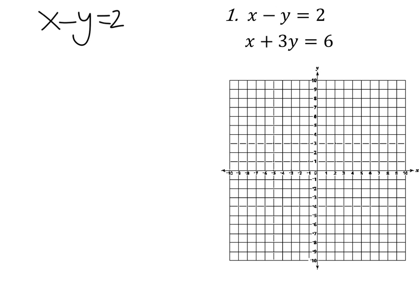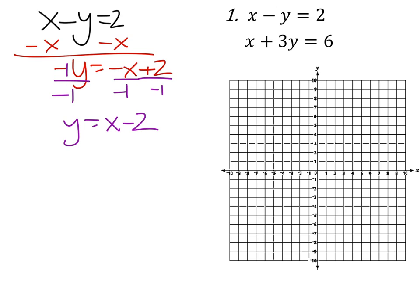So if we want to change this first equation, we would subtract x from both sides. That would give us negative y equals negative x plus 2. Finally, we would divide everywhere by that negative 1, and we'd get y equals x minus 2.